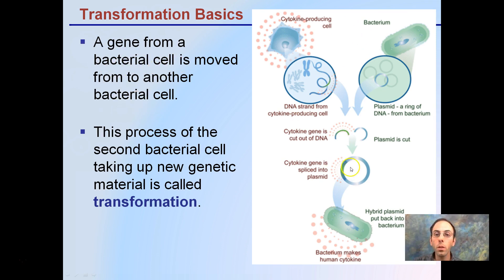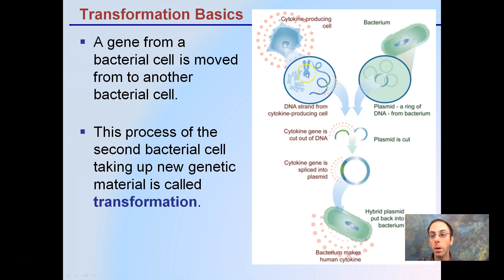Here we have an example. We have a blue bacteria and a green bacteria. The blue bacteria produces something desirable that we want the green bacteria to also produce. It could be that the blue bacteria lives in conditions not conducive to something, and the green bacteria fills a niche we need.